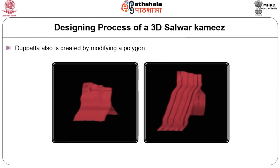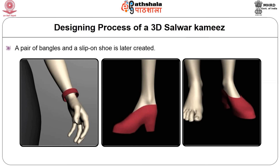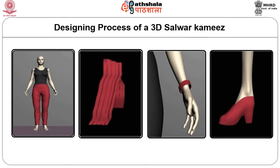A pair of bangles and a slip-on shoe is also created to give a complete look to the salwar kameez. The salwar, kameez and dupatta are then modified into a mesh smooth, where the polygons and edges are smoothened. Smoothening creates an illusion of roundness by assigning smoothing groups at the face, element, or object level. The salwar, kameez and dupatta will be subjected to UVW mapping, which ensures that the texture mapping is more refined. Finally, the salwar, kameez and dupatta are texturized and rendered. This is a simple method of creating a salwar kameez and dupatta along with bangles and slip-on shoes in 3D form.